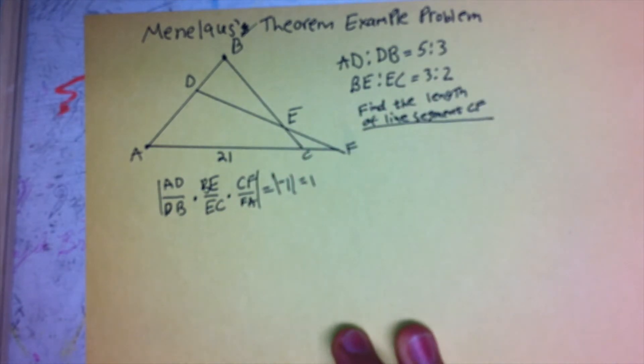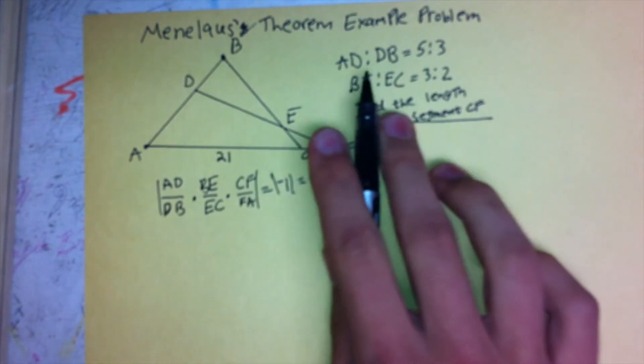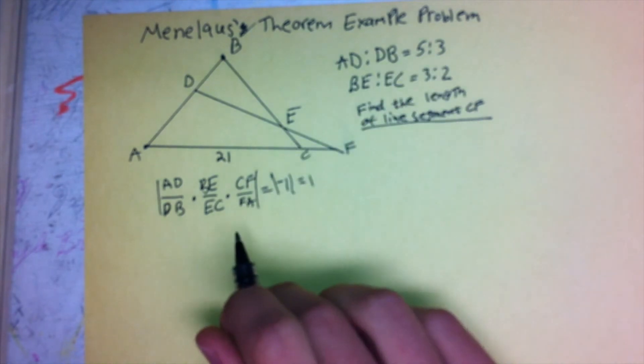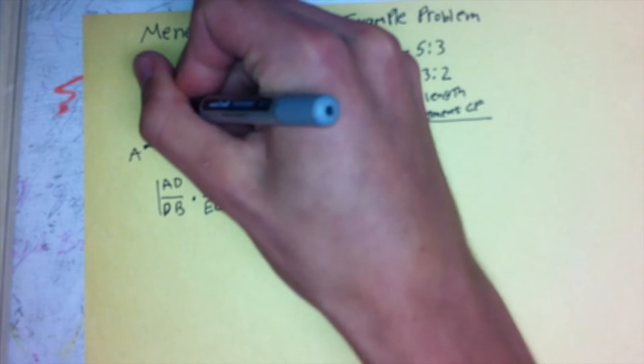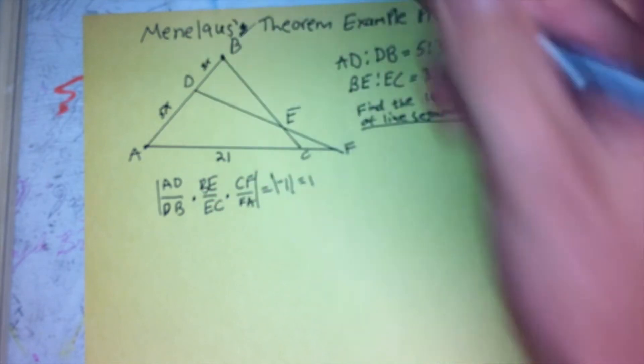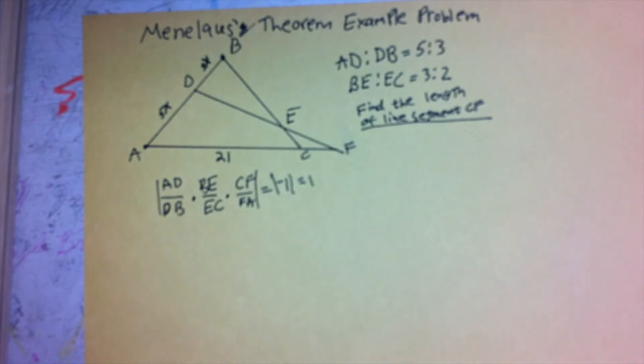And so, now we're going to start substituting values into the equation. And here's the tricky thing. We don't really know what these side lengths are, but we know that AD to DB is a ratio of 5 to 3. So, we're going to make these side lengths 5x and 3x, so that the x's will cancel and give a ratio of 5 to 3.